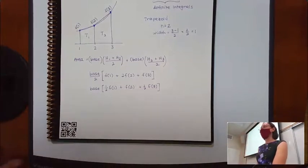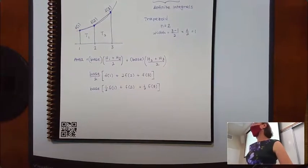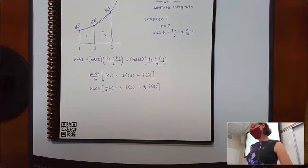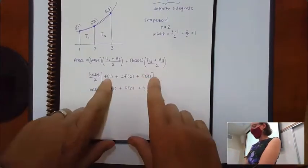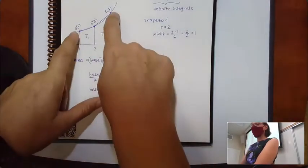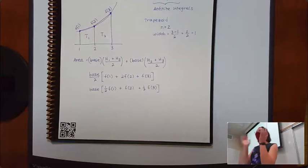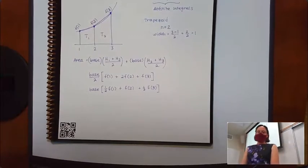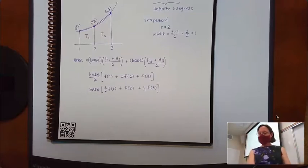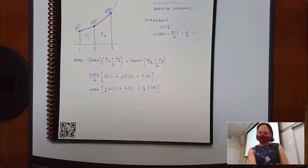If you're using this version of the formula, the first and last don't get multiplied by two because they only get used once, but all of the values in between will get used by both the trapezoid on the left and the one on the right. I'm going to call it there for the day. We'll do more with this on Wednesday. I do have office hours on Zoom from two to three today, so you're totally welcome to stop by.